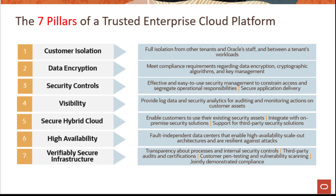Secure hybrid cloud: ensuring that if a customer has an on-premise data center and a public Oracle Cloud Infrastructure account, any kind of access or interconnectivity from the on-premise network to public cloud can be achieved securely, including support for third-party security solutions the customer might already have. Providing high availability both at the data center level, within the data center, and at a regional level. Verifiably secure infrastructure: providing transparent communication for internal security controls that are implemented, any kind of third-party audits and certifications, and providing customers the ability to perform penetration or vulnerability scanning on the resources they have deployed within Oracle Cloud Infrastructure.